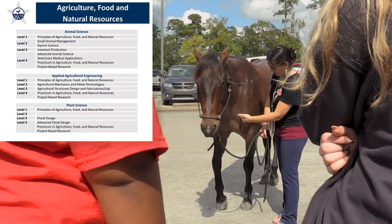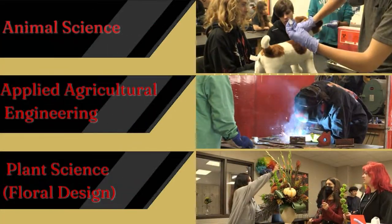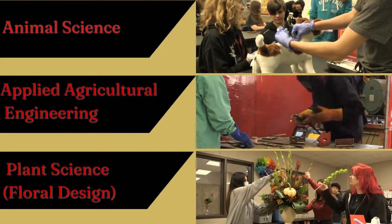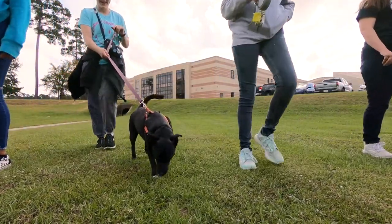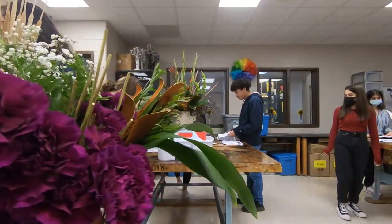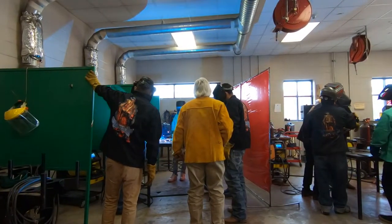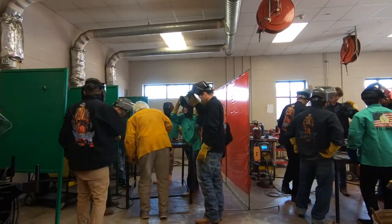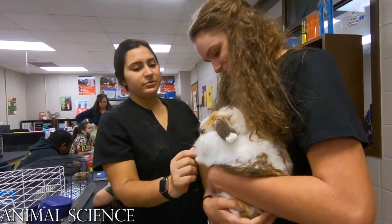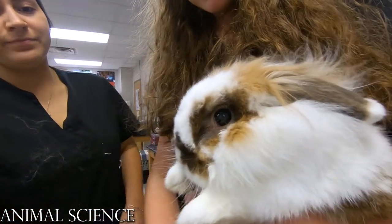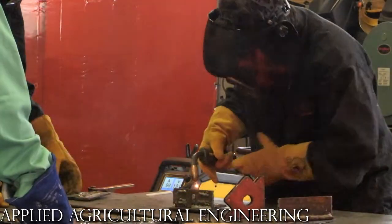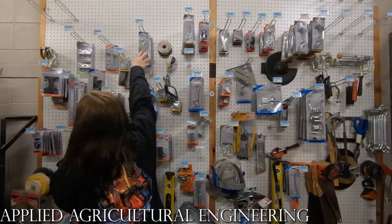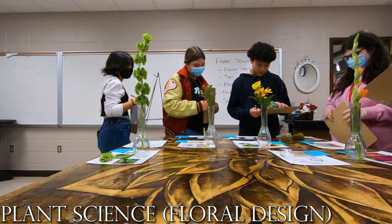Within the Agriculture, Food and Natural Resources career cluster there are three programs of study for you to explore: animal science, applied agriculture engineering, and plant science. If you are an animal lover, looking for an artistic outlet like floral design, or want to work with metal, wood, electricity, plumbing, trades and more, then these pathways are a great option for you. To enter any of these programs you will need to sign up for the introductory course, Principles of Agriculture, Food and Natural Resources. After taking the prerequisite course you will choose the pathway of your choice. To see the full list of courses, visit the CTE webpage on Conroe ISD's website or speak with your counselor.